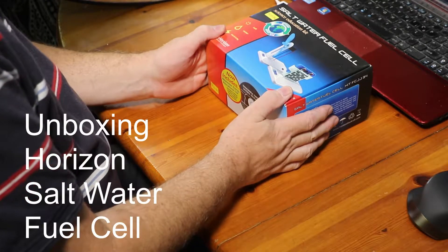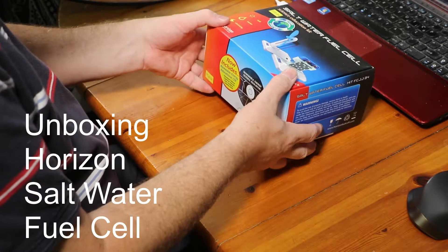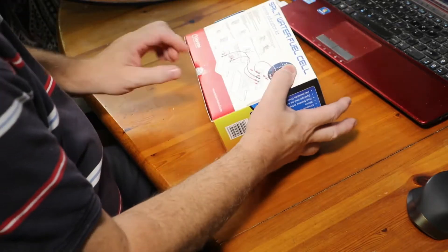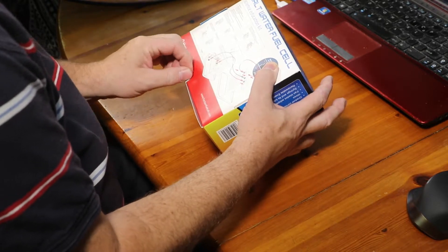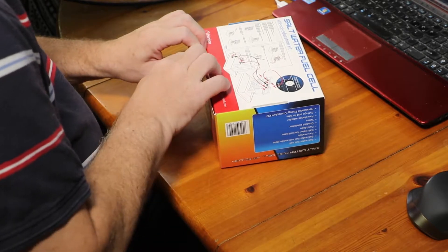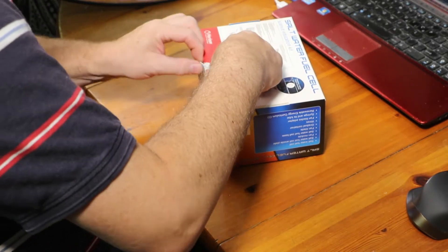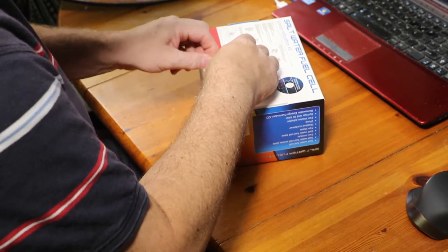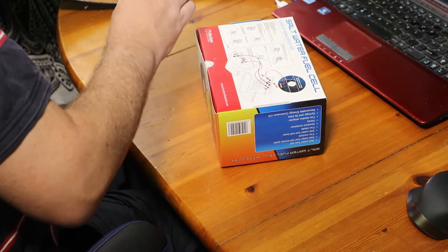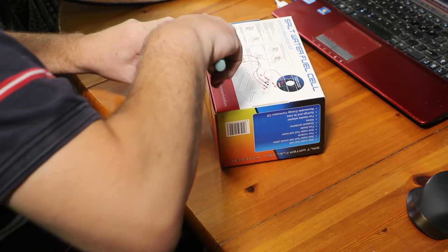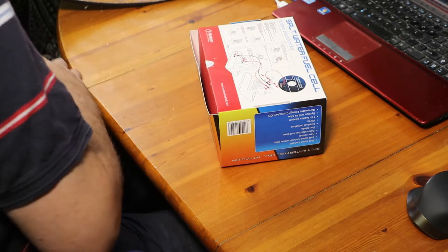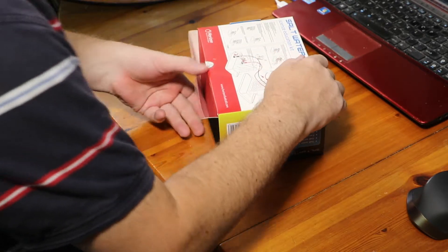This is the Horizon saltwater fuel cell and it's going to need to try to open it. It really is difficult. A little cheap, so I'll use a knife.